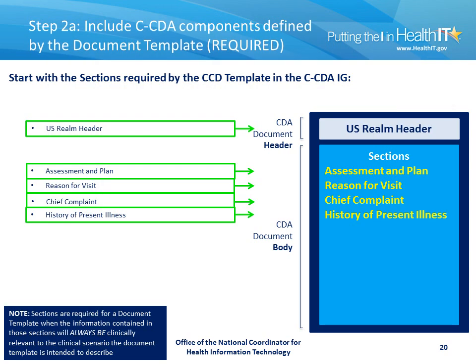As before, the second step in this process is to start with the sections required by the document template in the Consolidated CDA Implementation Guide. In this case, we start with the U.S. Realm header, the Assessment and Plan section, the Reason for Visit section, the Chief Complaint section, and the History of Present Illness section.